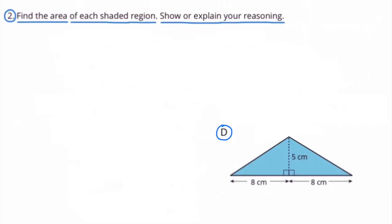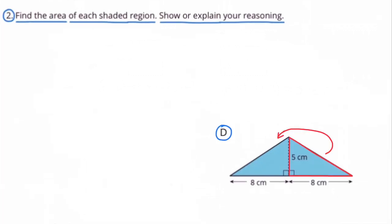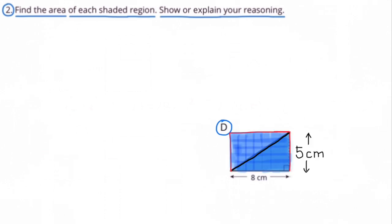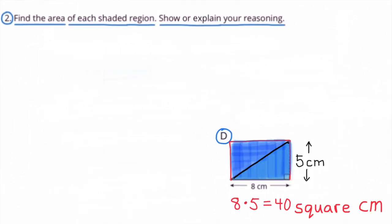D. When you decompose this symmetrical shape, you can form a rectangle that has dimensions of 8 by 5. The area of the shaded region is 40 square centimeters.